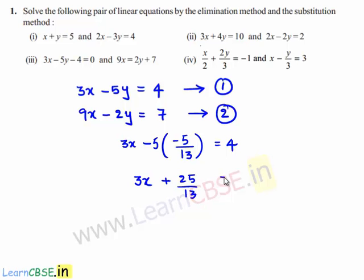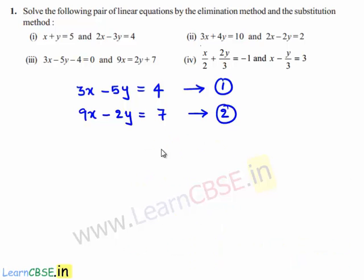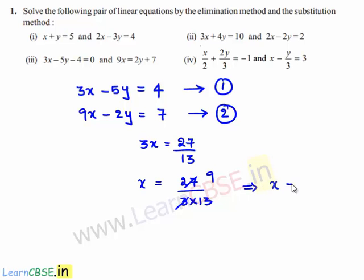We get 3x plus 25 by 13 equals 4. Transposing 25 by 13 to the right-hand side: 3x equals 4 minus 25 by 13. Taking LCM as 13, we get 4 times 13 minus 25 over 13. That is 52 minus 25 over 13. So 3x equals 27 by 13. Therefore x equals 27 divided by 3 times 13, and since 3 goes into 27 as 9, x equals 9 by 13.